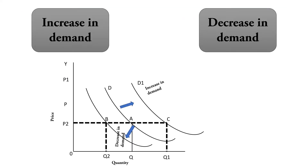The shift in the demand curve also has two aspects: increase in demand and decrease in demand. In the diagram, the original quantity is shown, but because of other factors the quantity demanded increases — shown as a rightward shift — or decreases — shown as a leftward shift. This is the concept of shift in the demand curve, also called change in demand.